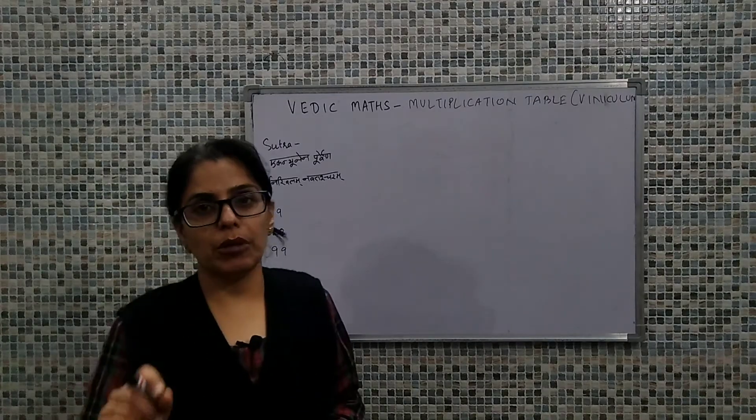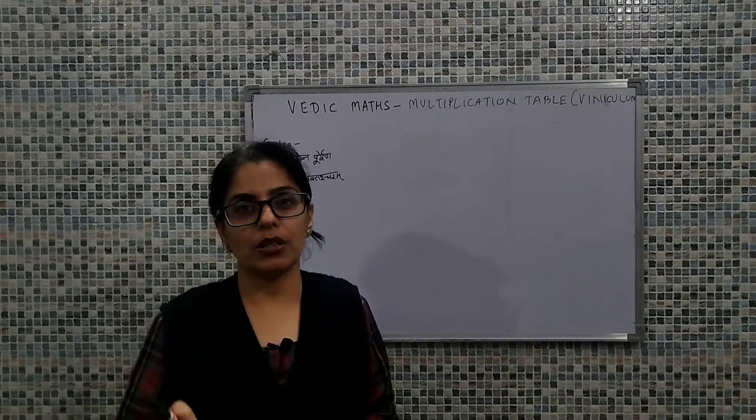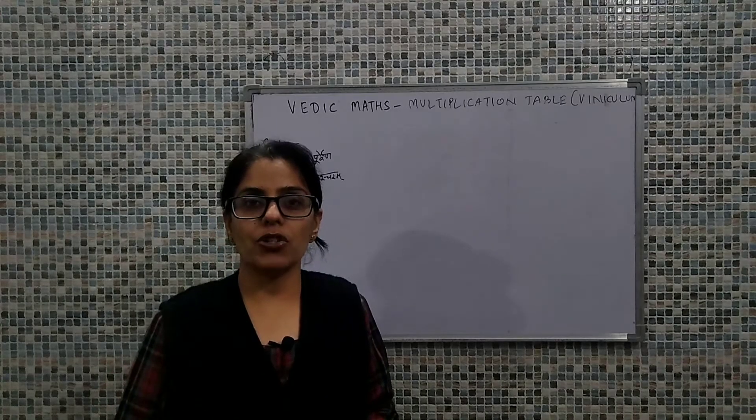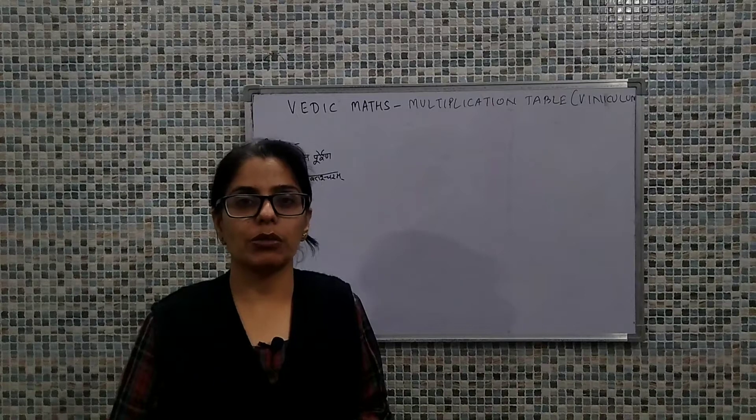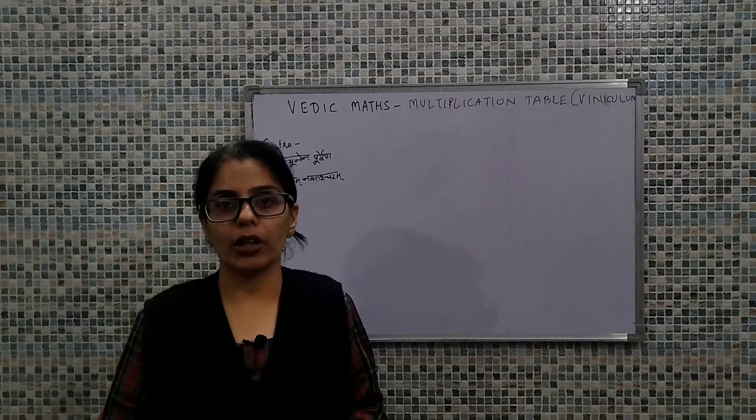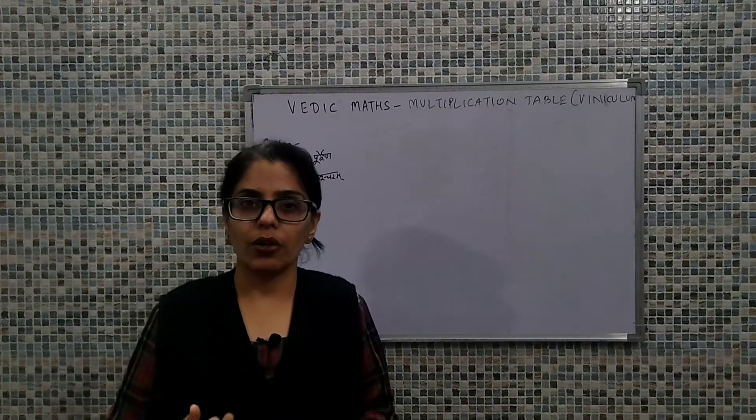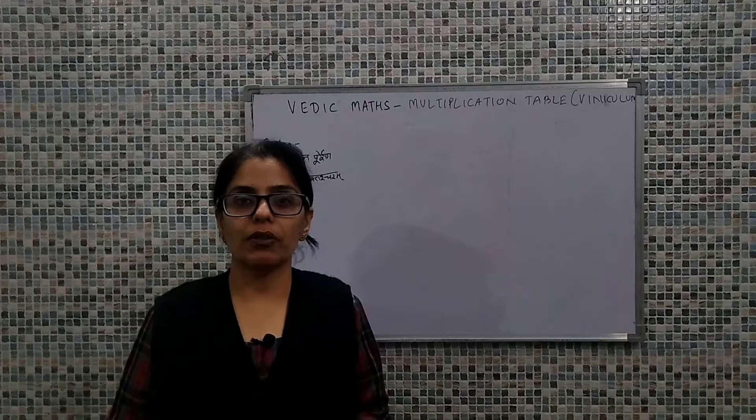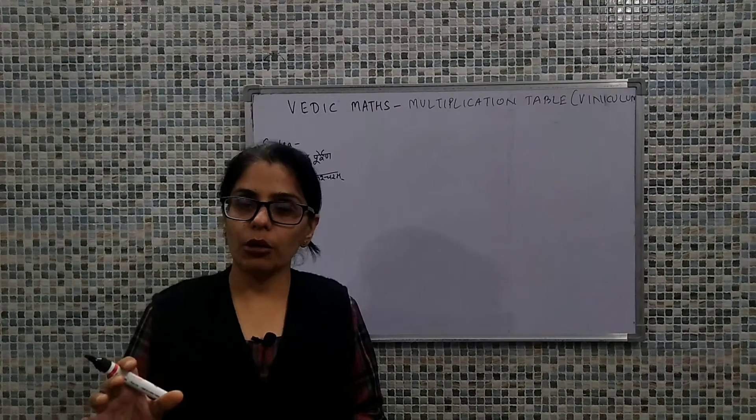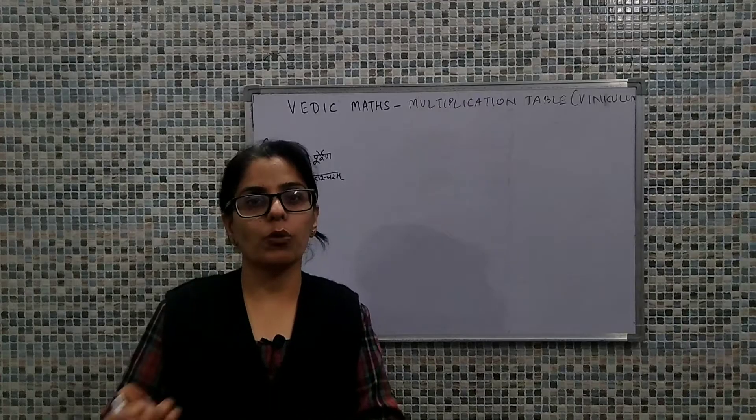Now let me make you familiar with the term viniculum. Viniculum is basically a basic operation where we have the feasibility that we can convert the bigger values into the smaller values. When I'm talking about bigger values, I mean 5, 6, 7, 8, 9. If these are our big values and we convert them into small values, obviously our calculation will be simpler.